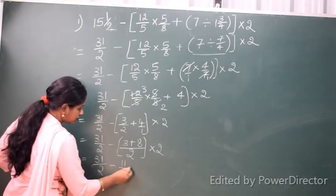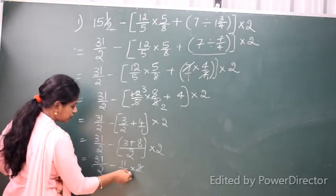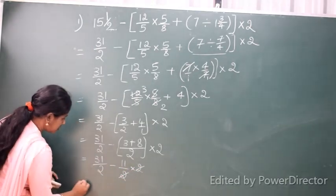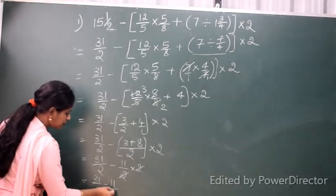3/2 plus 8 equals 11/2. The 2s cancel again, so now we have 31/2 minus 11.